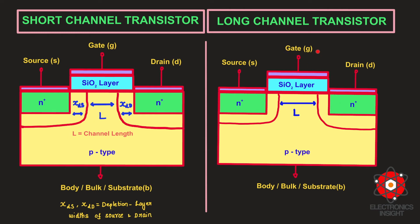In a long channel transistor, current conduction is controlled by the gate-to-source voltage. If the gate-to-source voltage is less than the threshold voltage — the minimum gate voltage requirement — then the channel faces a potential barrier which blocks current flow. Once the gate voltage exceeds the threshold voltage, the potential barrier is reduced and inverts the surface of the channel to allow conduction. These working principles of a basic n-type MOSFET were covered in previous videos.